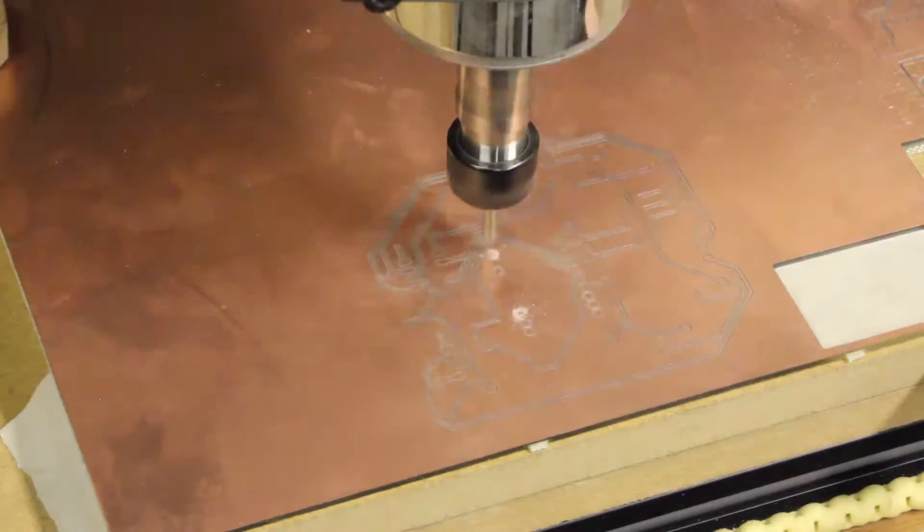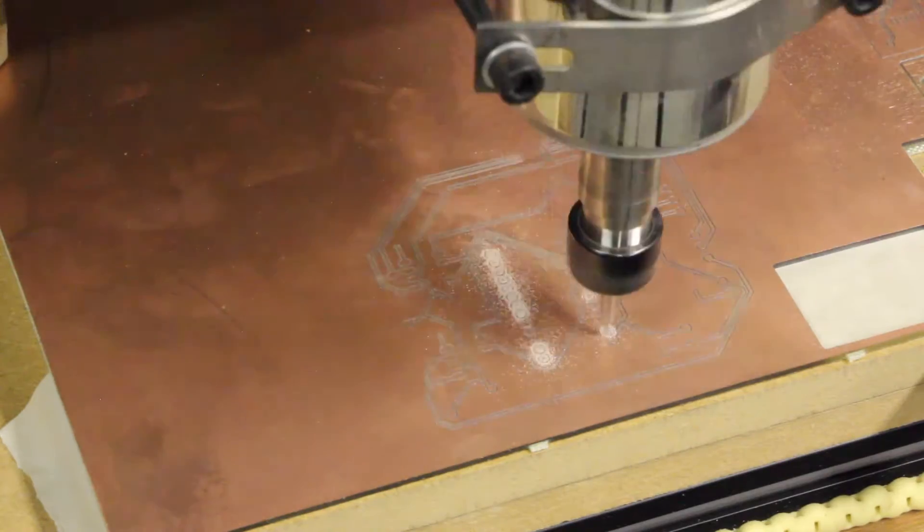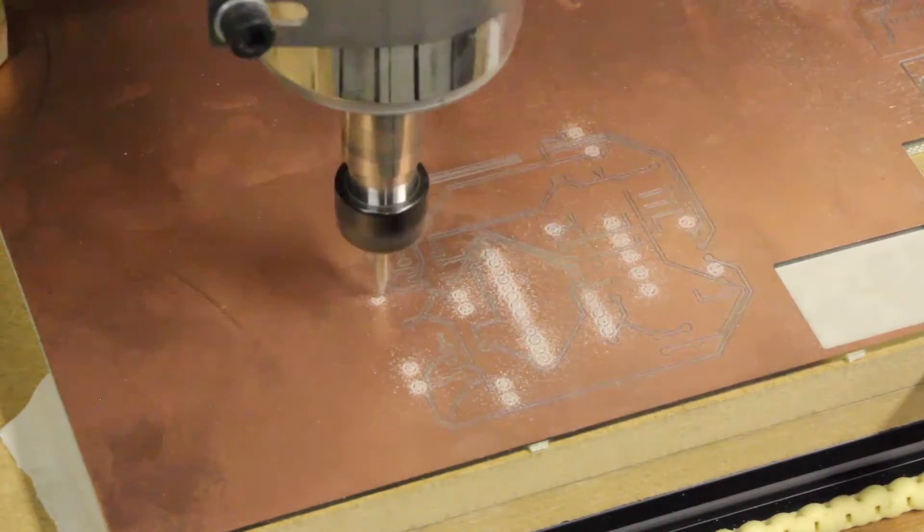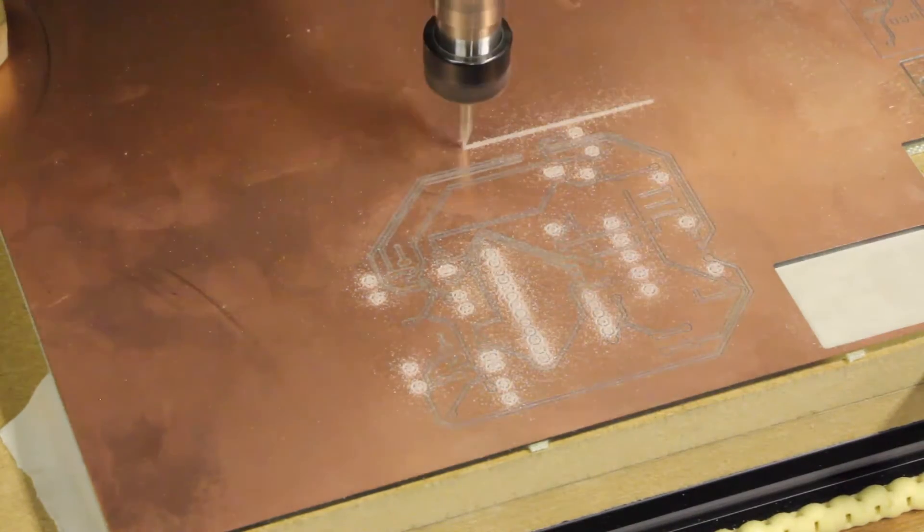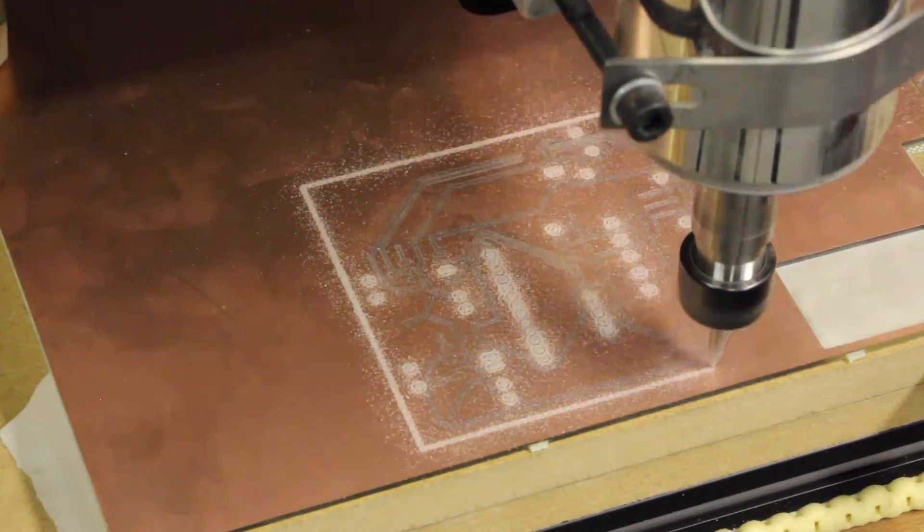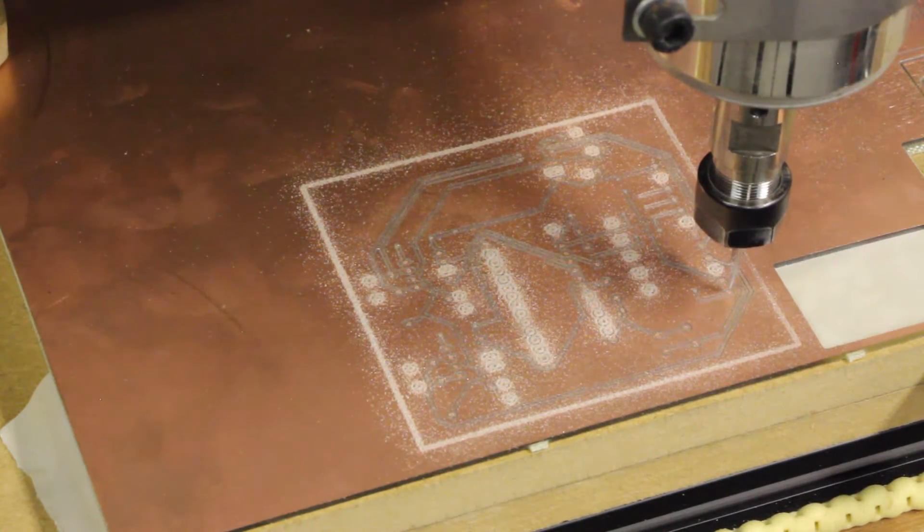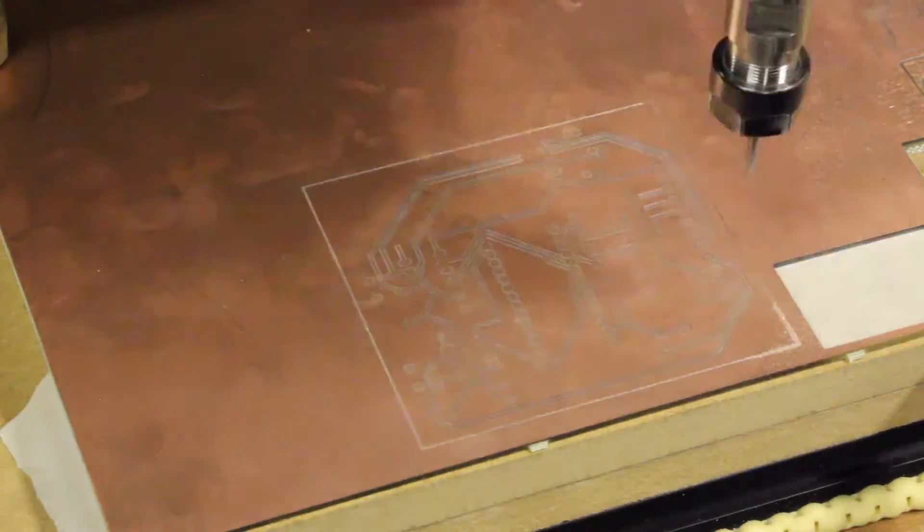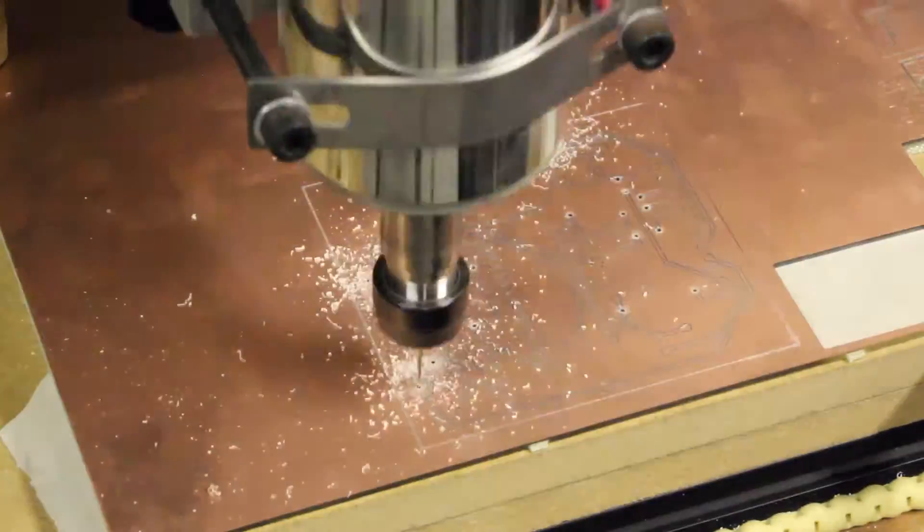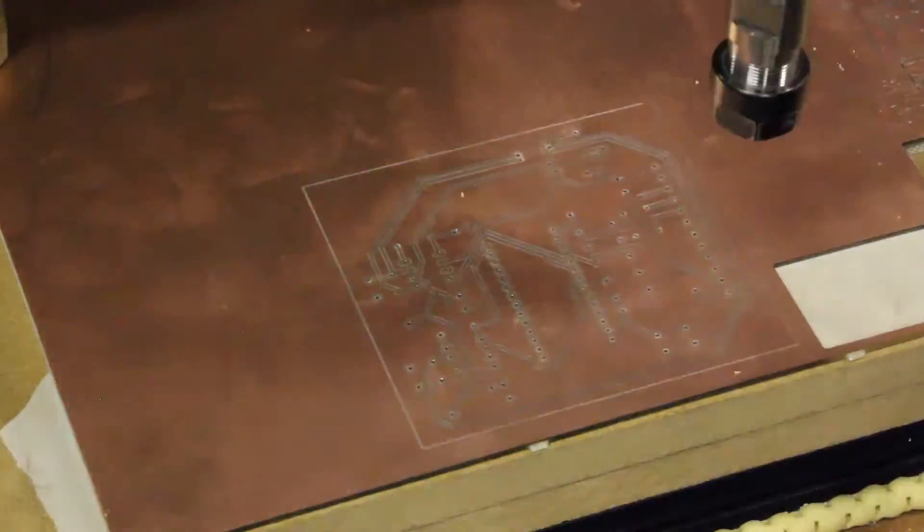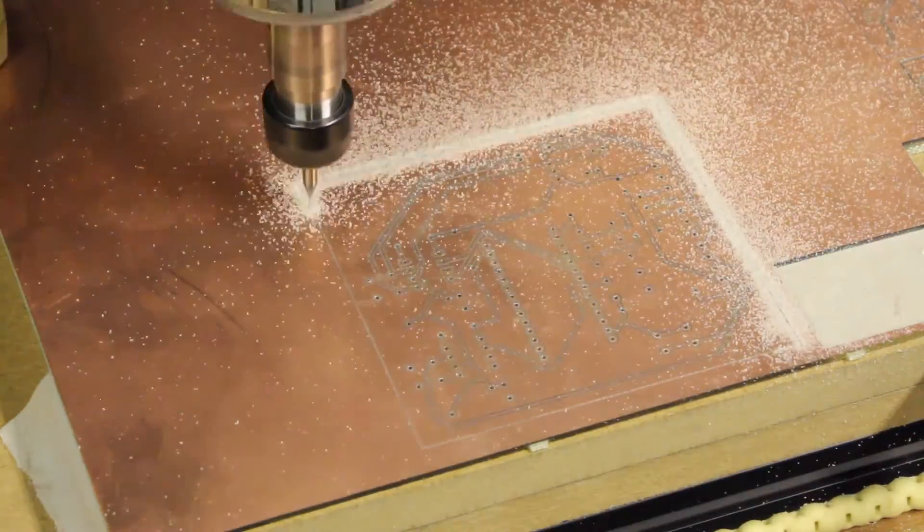I'm using a 30-degree V-bit to do the milling, and you can see it center punches the holes. Now I'm changing the tool for the hole drilling bit. And now we're drilling all the holes. And now we're cutting out the board.